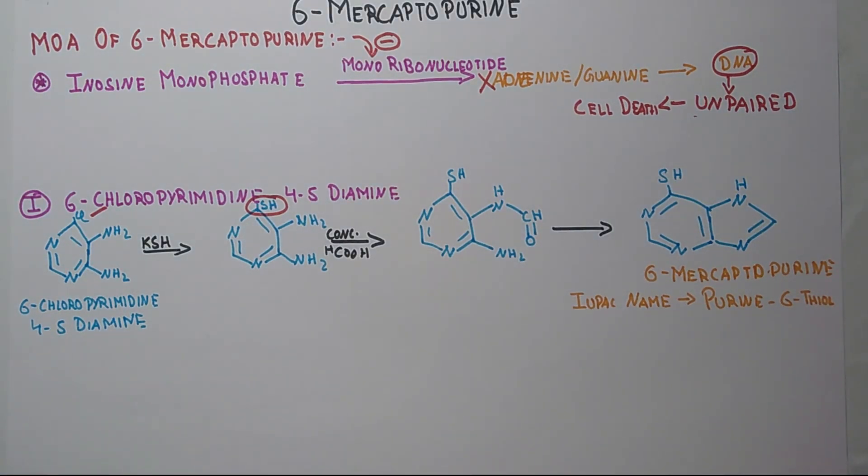So students, we have already told you that there are two pathways. The second pathway is from 7H purine-6-thiol. So the starting material is 7H purine-6-thiol. The structure is - it is 7H purine-6-thiol.